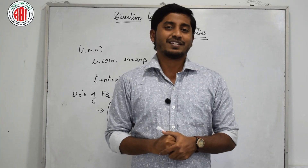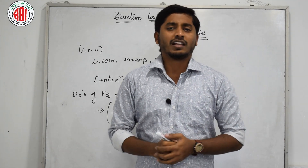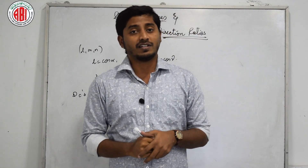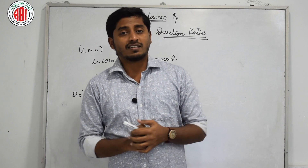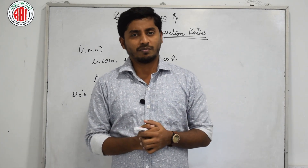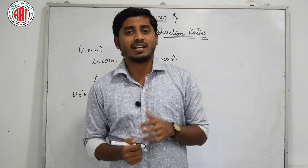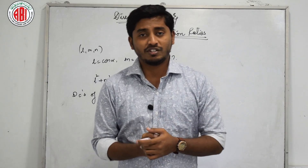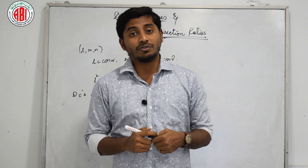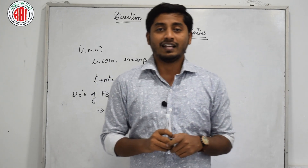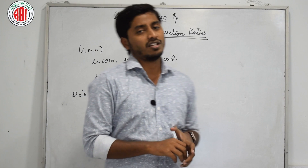Hello everyone, myself Sai Prasad, a lecturer at Ahlewath High School and Junior College. Welcome to this series of lectures on Intermediate First Year Maths B. We have started our discussion with the different concepts of 1B — locus, transformation, straight lines, pair of straight lines, and 3D geometry. Today we are going to discuss a new topic: DCs and DRs, which is nothing but direction cosines and directional ratios.